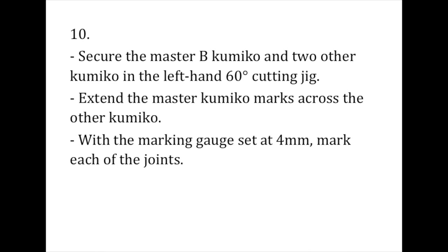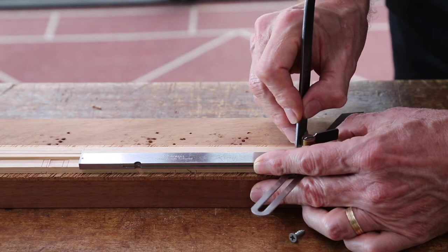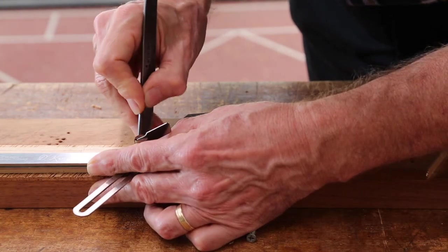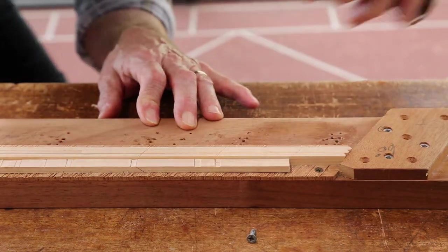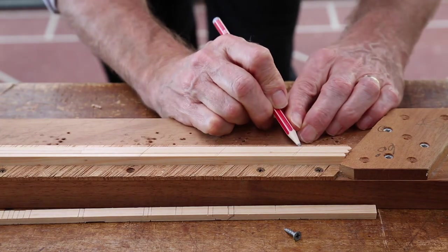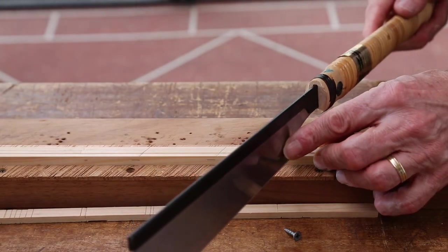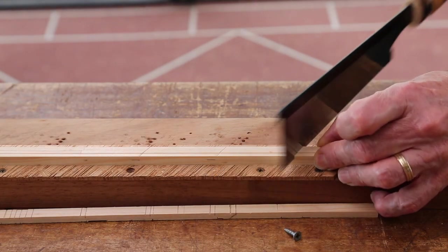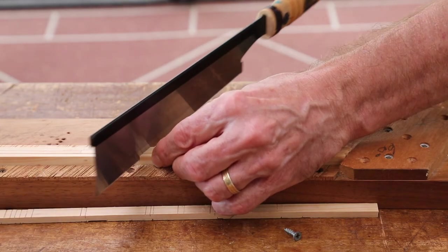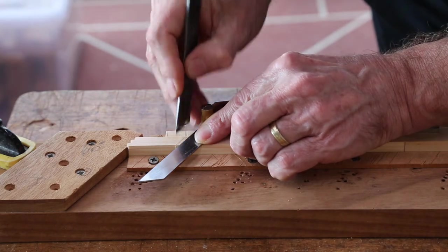Next we move on to the B kumiko. Secure the master B kumiko and two other kumiko in the left hand 60 degree cutting jig, then extend the master kumiko marks across the other kumiko as normal. Set the marking gauge at four millimetres and mark each of the joints. This is one-third depth and you'll cut down to this line. Next cut down to the four millimetre line. Make sure you don't go past this line, otherwise you'll weaken the joint. Now mark and cut the other side of the joint. This is no different from the cuts for any other joint, except you only cut down four millimetres.